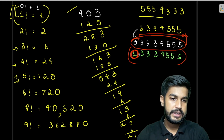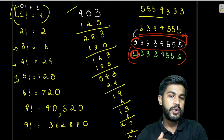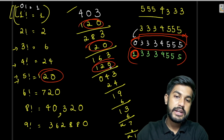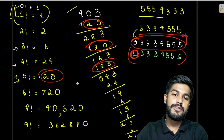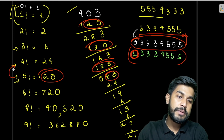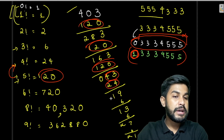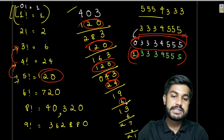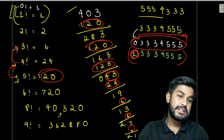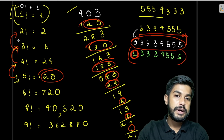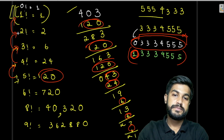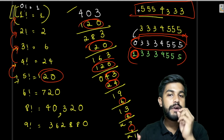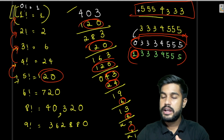We keep subtracting the current largest factorial block until the remainder is smaller than it, then move to the next smaller block. We subtracted 120 repeatedly, then moved to 24, then to 6, and so on. Instead of taking 0 at the end, we take 1, and then we reverse the collected digits to get the smallest number.